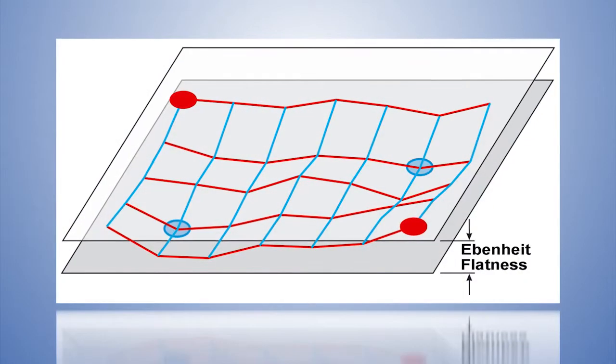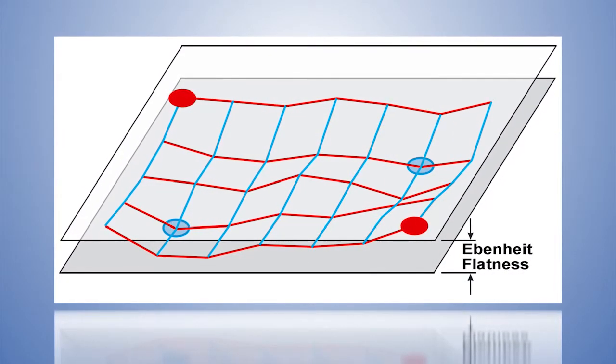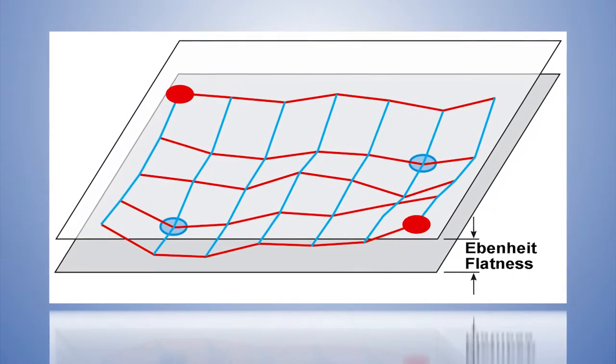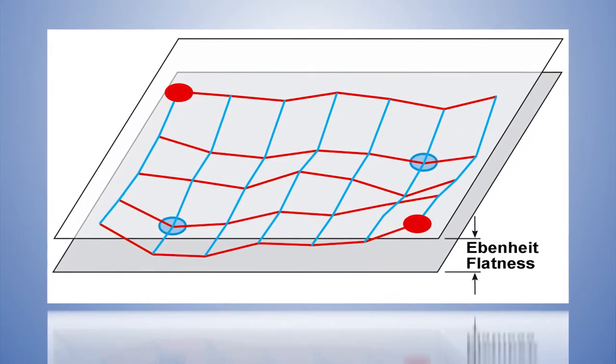Where is a relative measurement sufficient? In the flatness measurement, we are not interested in the inclination of the object, but in the structure, respectively, the flatness of the surface.